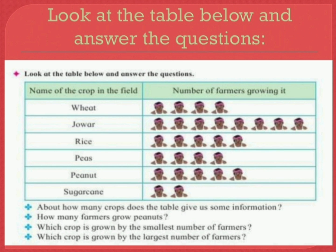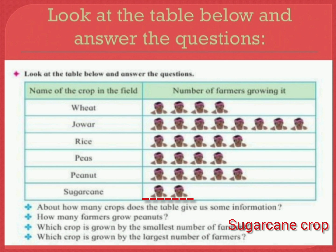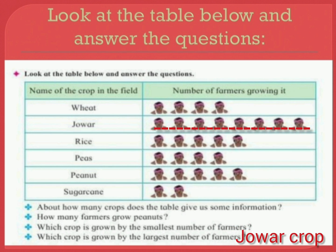Question 2: How many farmers grow peanuts? 5 farmers. Question 3: Which crop is grown by the smallest number of farmers? Sugarcane crop. Question 4: Which crop is grown by the largest number of farmers? Jawar crop.